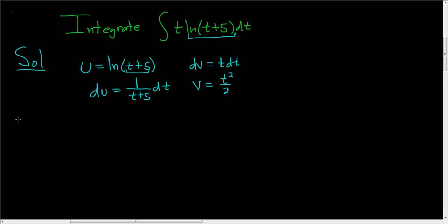So now we'll go ahead and use the integration by parts formula. So our integral, the integral of t natural log t plus 5 dt, is equal to uv, so t squared over 2, times the natural log of t plus 5, minus the integral of vdu. So I'm going to pull the 1 half out, and so we end up with t squared over t plus 5 dt.